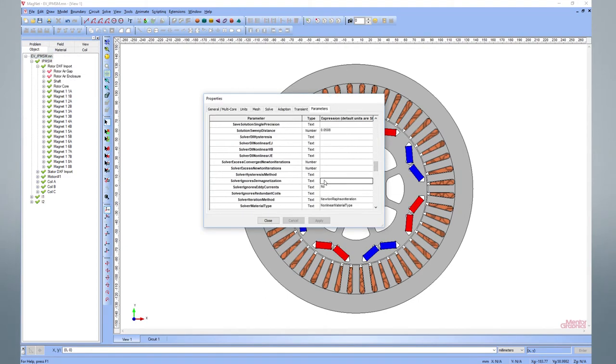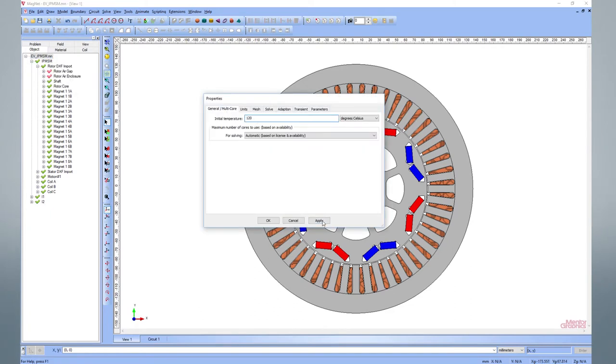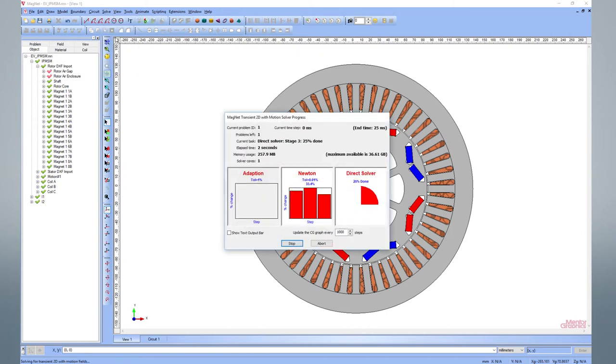You need to enable the demagnetization model and change the model temperature from room temperature to 120 degrees Celsius.